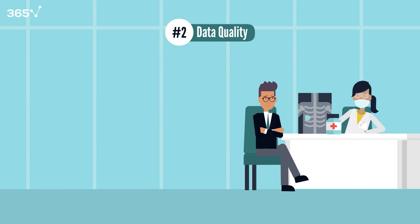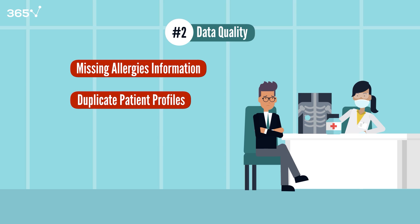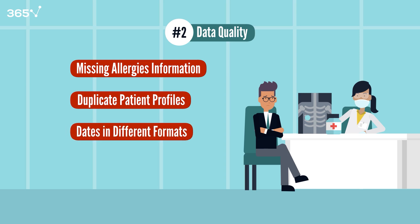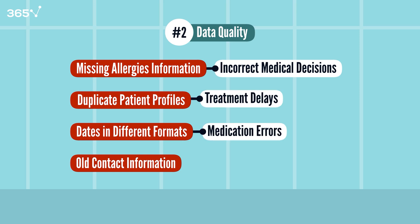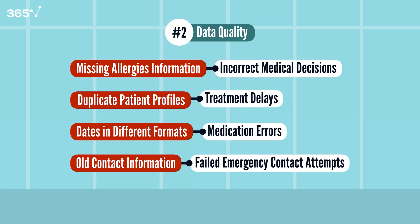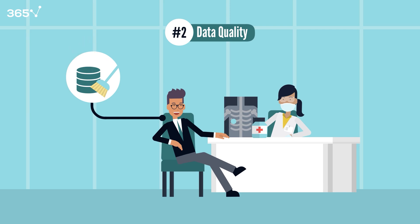Consider this real-world example: a hospital database where patient records have missing allergy information, duplicate patient profiles exist, dates are recorded in different formats, and old contact information hasn't been updated. These data quality issues could have serious consequences such as incorrect medical decisions, treatment delays, medication errors, and failed emergency contact attempts. This is why maintaining high data quality is crucial — clean data ensures safe and effective patient care, and the same principle applies across all industries.